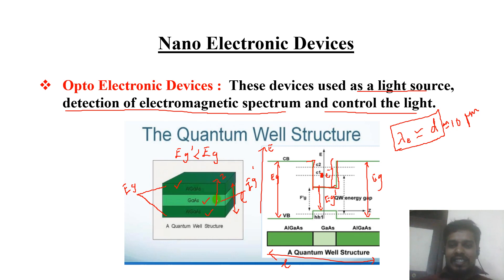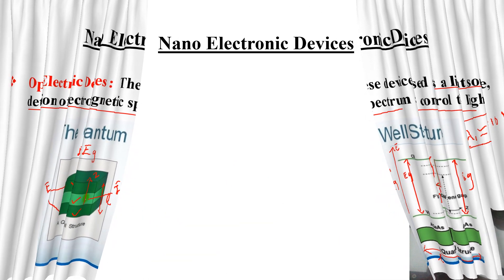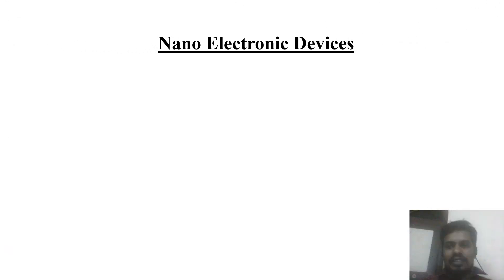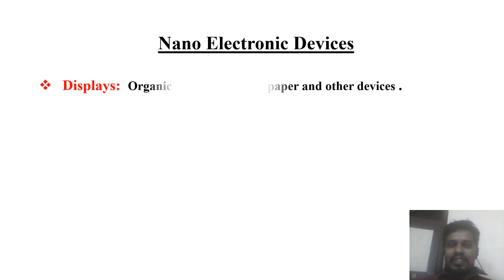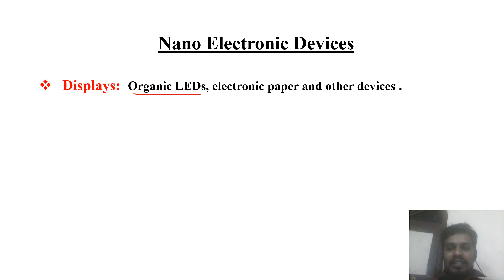We use this quantum well structure to generate laser photons by stimulated emission, and we will see this structure in more detail as we move on. Regarding displays, as we already discussed in the fourth unit, organic light-emitting diodes can be used in mobile devices as well as monitors. Nowadays we are seeing LED TVs and searching for organic LED TVs.